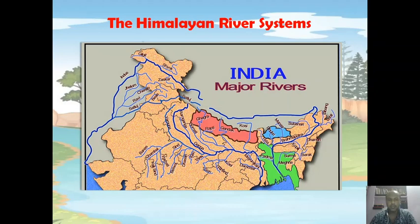These three river systems mainly occupy the northern Indian plain. The Indus river system is made up of river Indus and its five tributaries: Jhelum, Chenab, Ravi, Beas, and Sutlej.